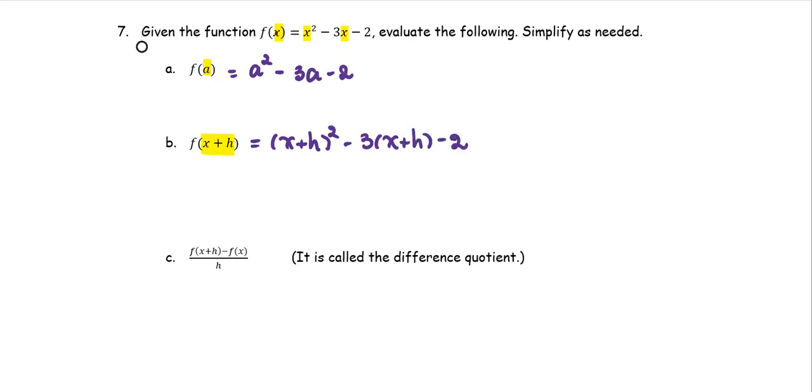For the power 2, it means x plus h multiplied by x plus h. We use the FOIL technique to get x squared plus 2 times xh plus h squared.